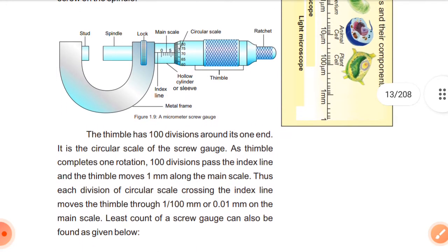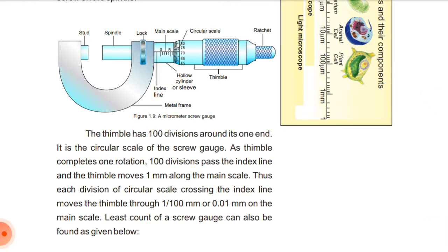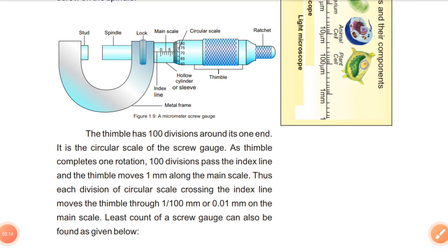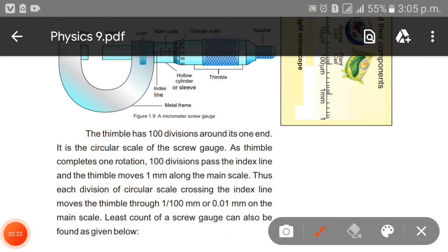The thimble has 100 divisions around its one end. It is the circular scale of the screw gauge. As the thimble completes one rotation, 100 divisions pass the index line and the thimble moves one millimeter along the main scale. Thus each division of the circular scale reading causes the index line to move the thimble through 1/100 of millimeter or 0.01 millimeter on the main scale. Least count of screw gauge can also be found as given below.